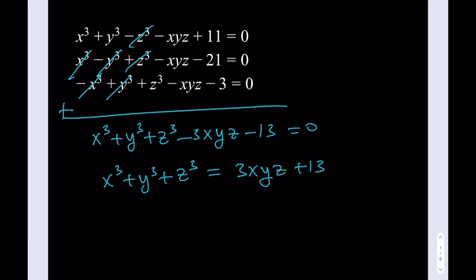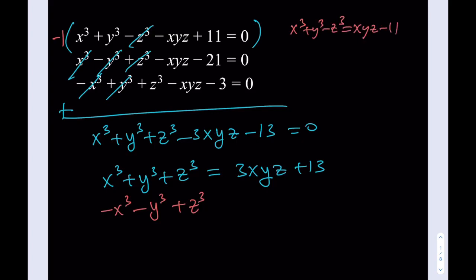What I'd like to do here is isolate x cubed plus y cubed plus z cubed, and that is going to look like 3xyz plus 13. So this is kind of my main equation. What I'm going to do is take each one of these equations and work with this one, but I want to get rid of more stuff. So I'd like to take the first equation and multiply it by negative 1.